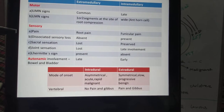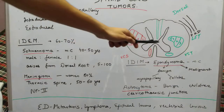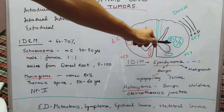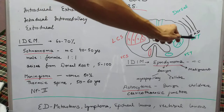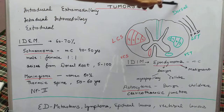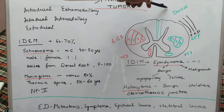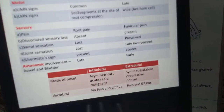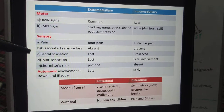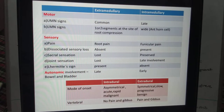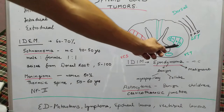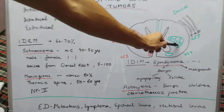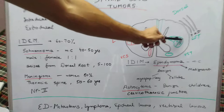Dissociative sensory loss means one tract is involved while another is spared. For example, if a tumor involves the lateral spinothalamic tract, pain and temperature are affected but dorsal column (proprioception, vibration, crude touch) is spared. This dissociative sensory loss is mostly seen in intramedullary tumors. Regarding sacral sensation: sacral fibers are the most lateral, so they are earlier involved in extramedullary tumors.